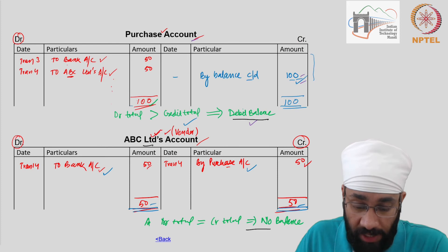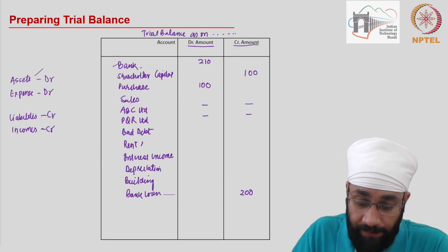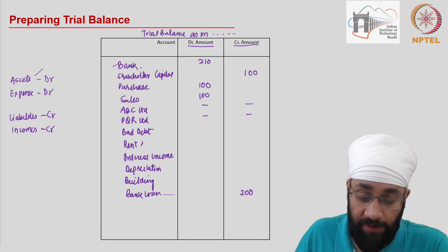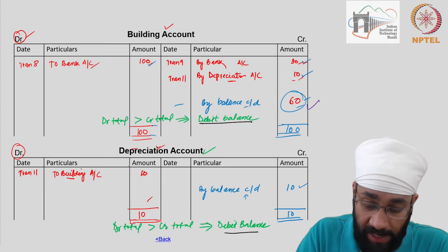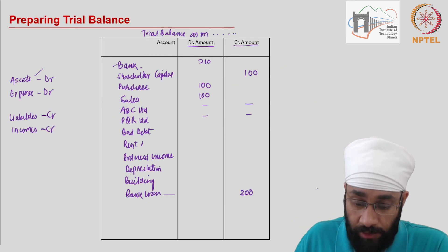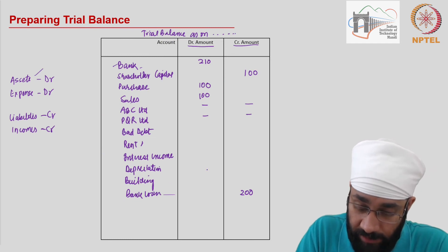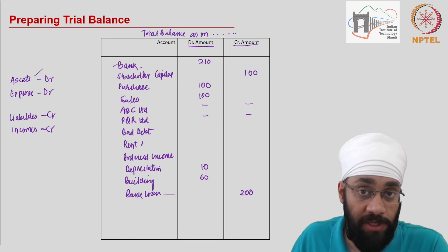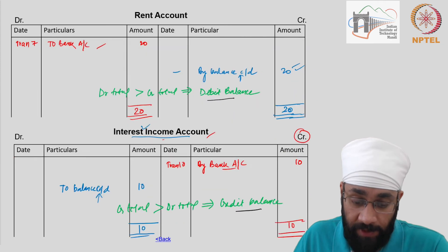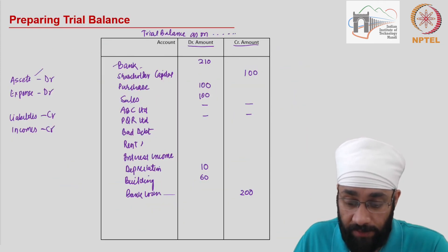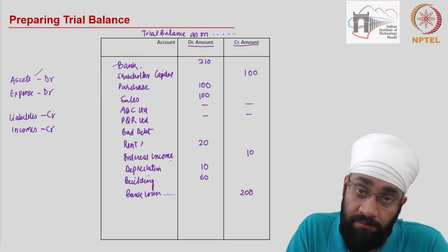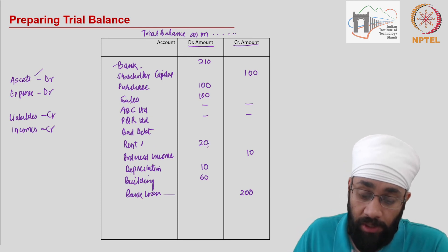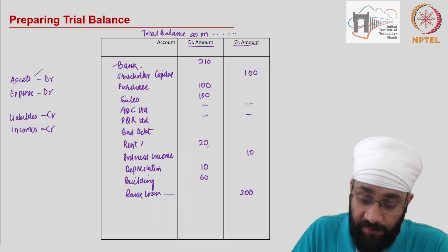Then you have sales account which has 100. Building account has 60 as the balance, and depreciation has 10 — both debit balances; depreciation is an expense and building is an asset. Then rent is 20 and interest income is 10. Interest income is an income — credit balance. Rent is an expense — 20 debit balance. And bad debts have 10.